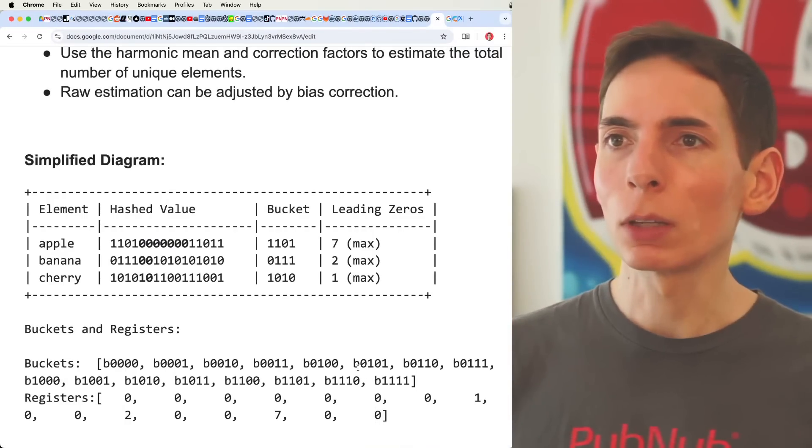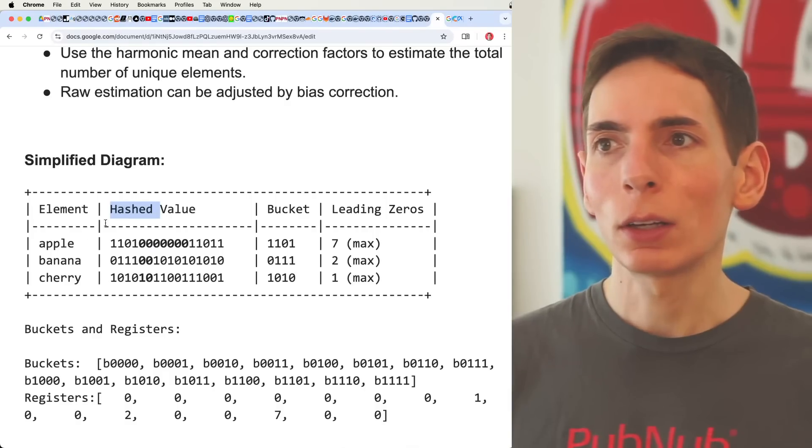So if you have a larger hash value and a larger bucket size, you'll be able to increase your overall accuracy.